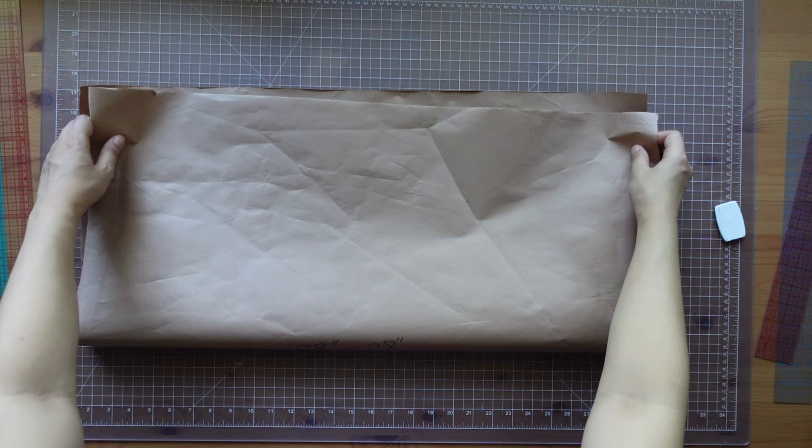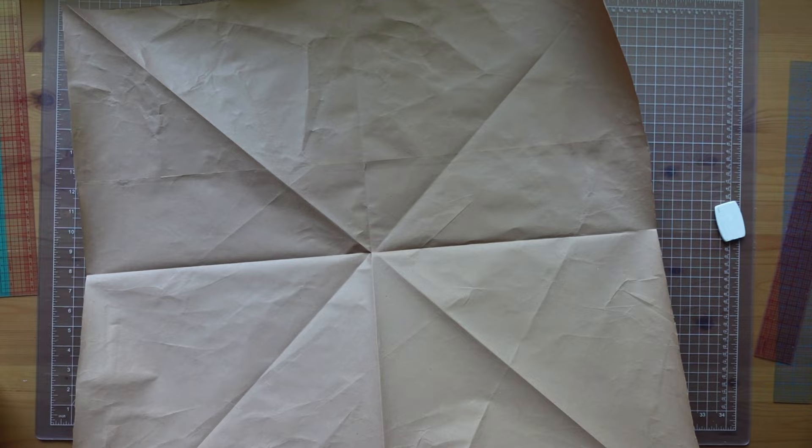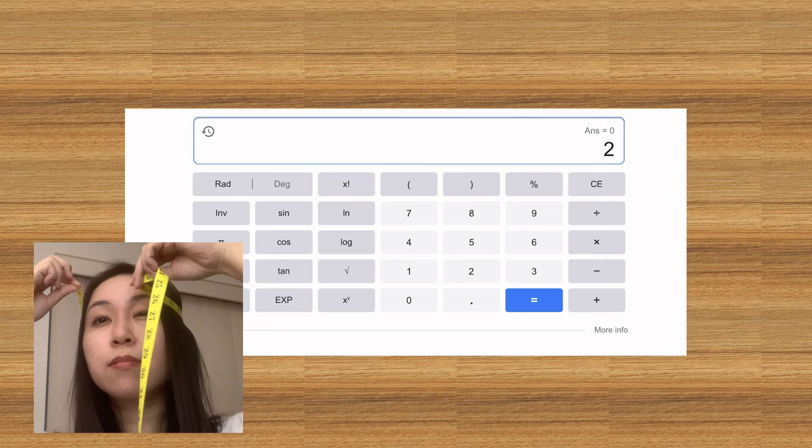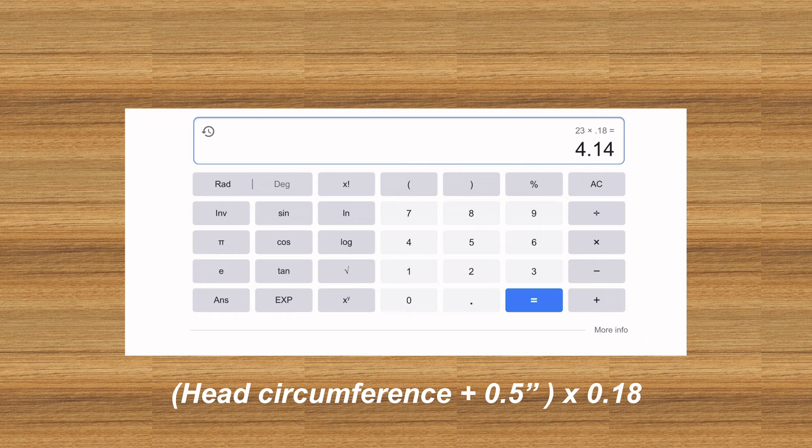I taped up some packing paper to get this square piece of paper. Measure your head circumference and add about half an inch. And then multiply that number by 0.18. This should work for both metric and imperial systems.